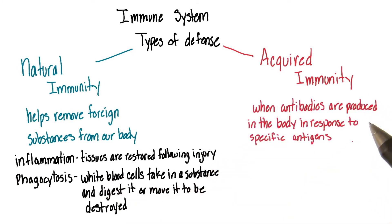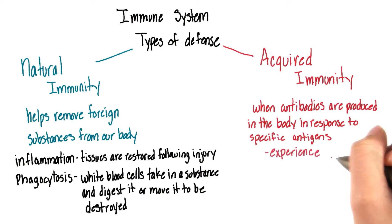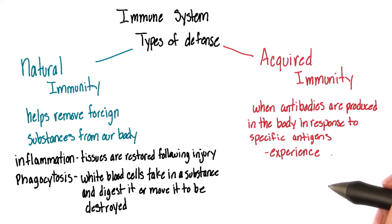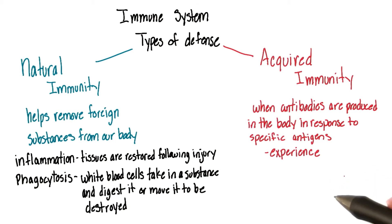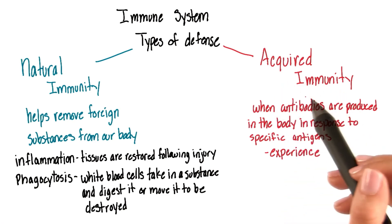We have acquired immunity when we get antibodies that are produced in the body in response to specific antigens. We get these through experience. For example, when you become sick from a virus, you develop antibodies that defend against that virus, and that's why specific viruses cannot affect you again in the future. This is an example of acquired immunity.